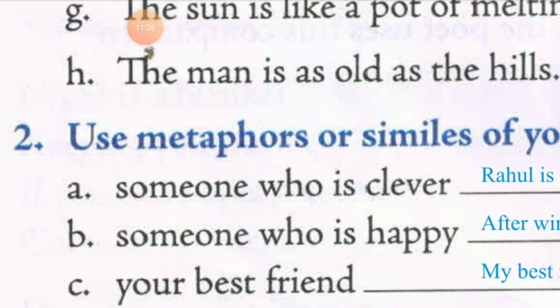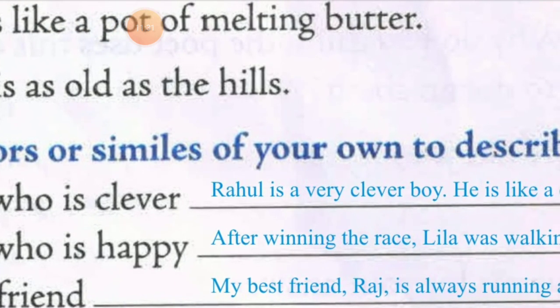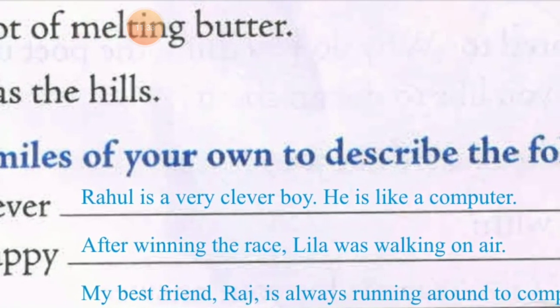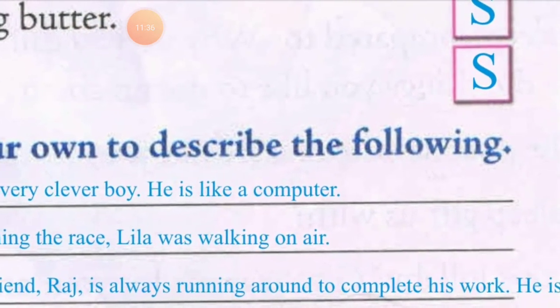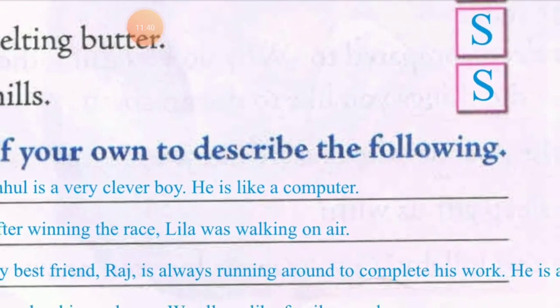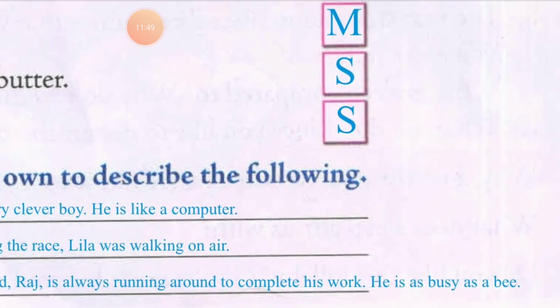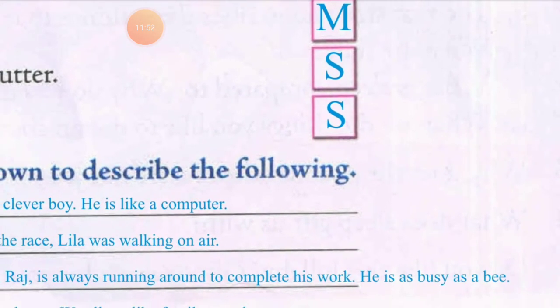Next: your best friend. Sentence one — metaphor: 'My best friend Raj is always running around to complete his work.' Sentence two — simile: 'He is as busy as the bee.' The word 'as' is used, so the second sentence is a simile.